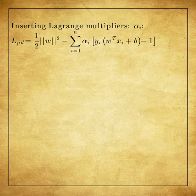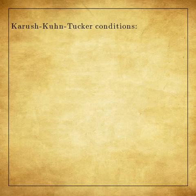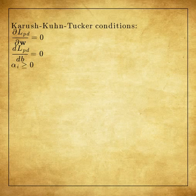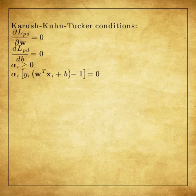Karush-Kuhn-Tucker conditions for this form is as follows. The partial derivatives with respect to the normal vector and bias is zero. Lagrange multipliers alpha are non-negative and the multiplication of alpha with the inequalities are zero.